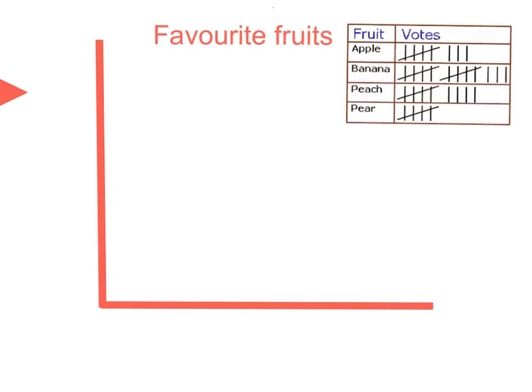So to start a graph off, what you have to do is determine what data you're going to collect. The data we're going to collect today is about favourite types of fruit. You can see up in the top corner I've already collected the data — we've asked people about their favourite types of fruit, given the options of apple, banana, peach, and pear.